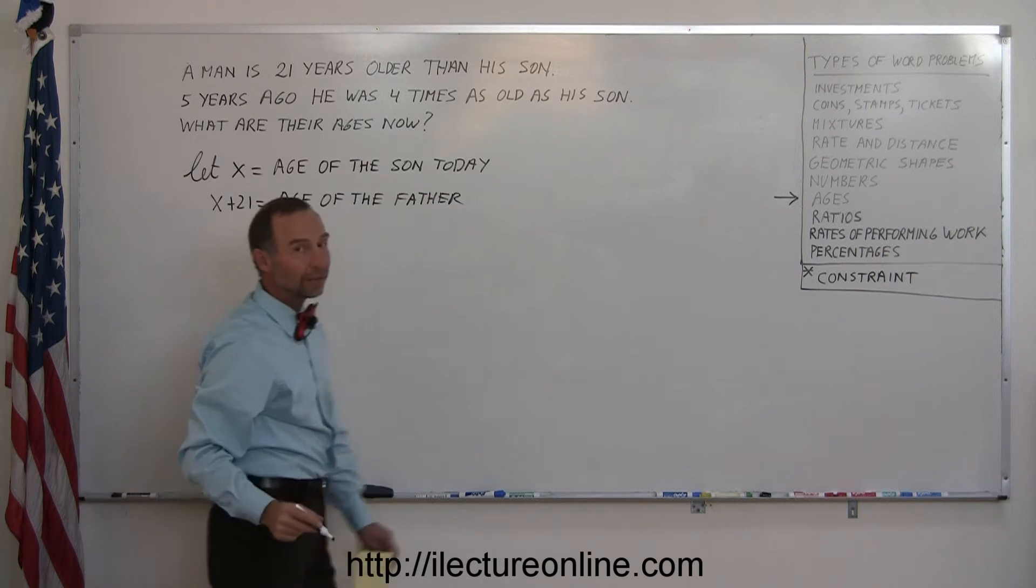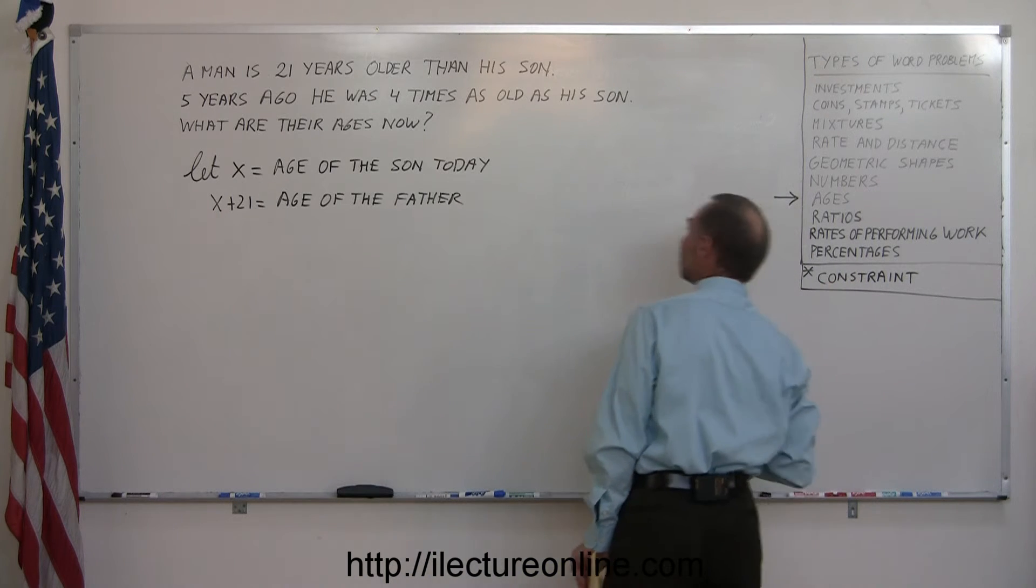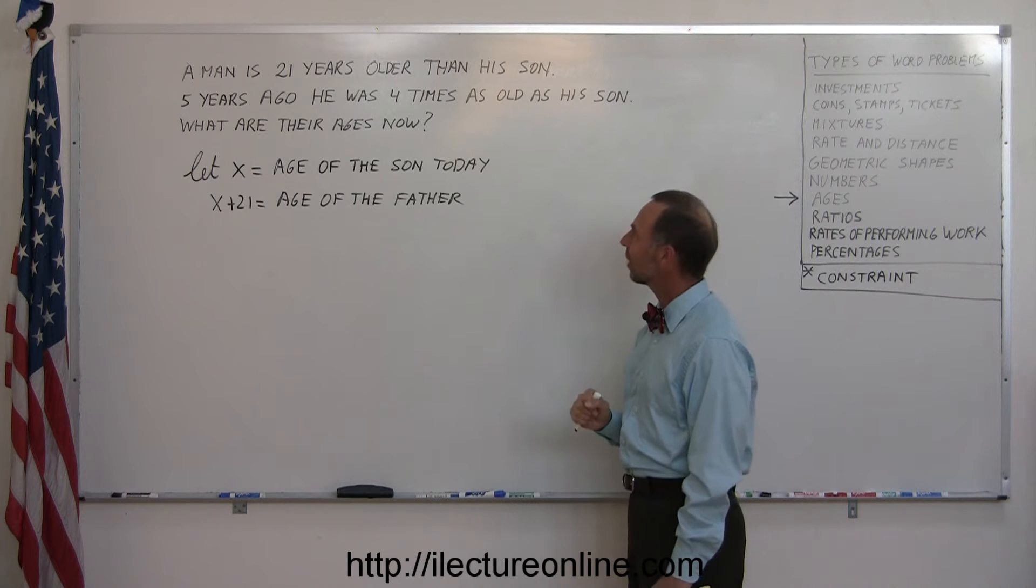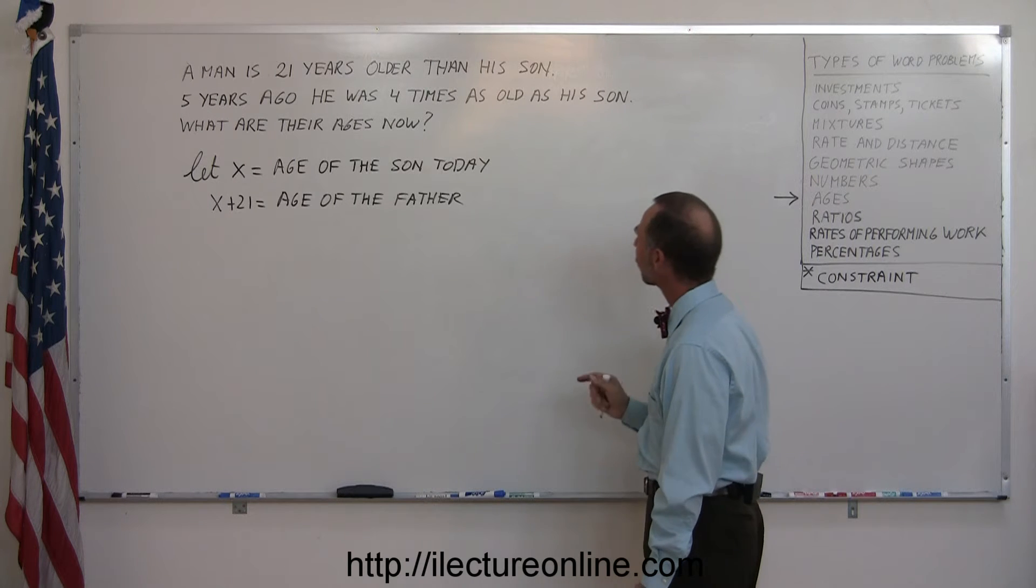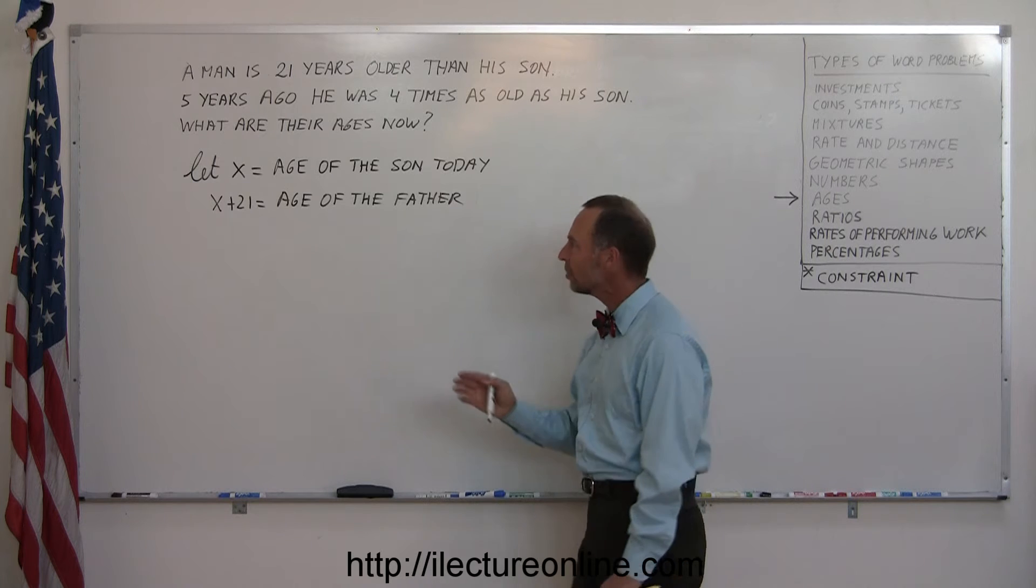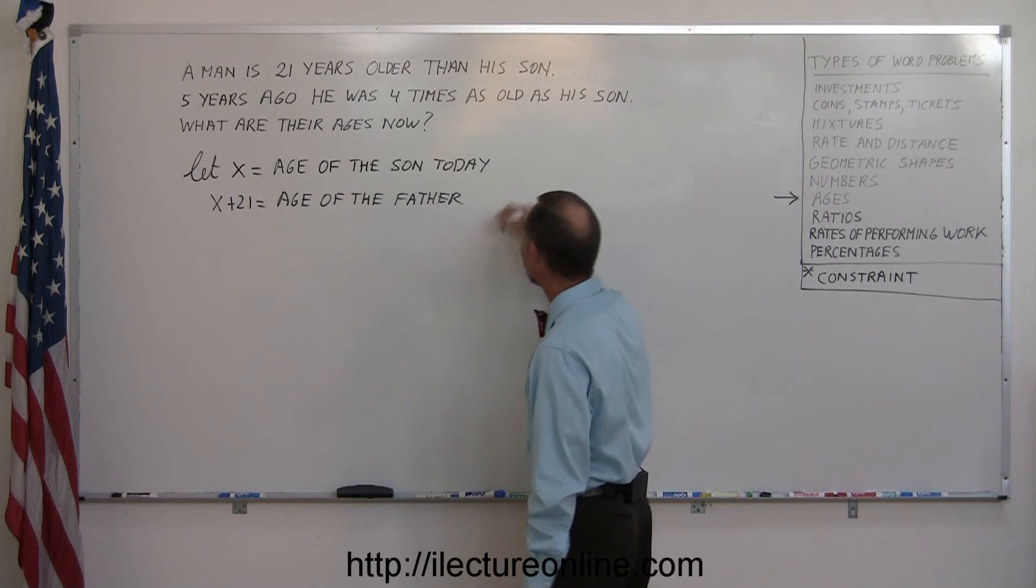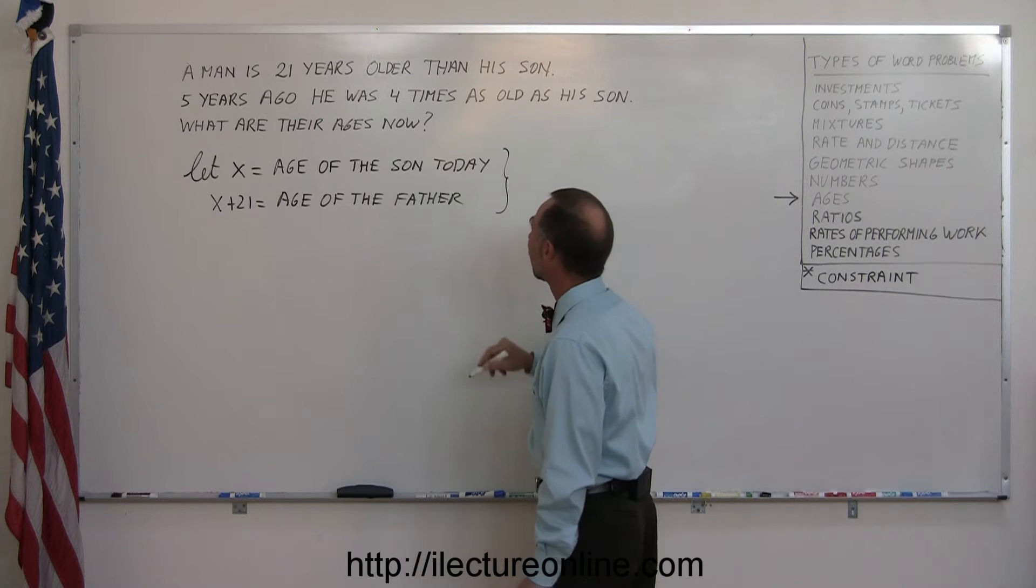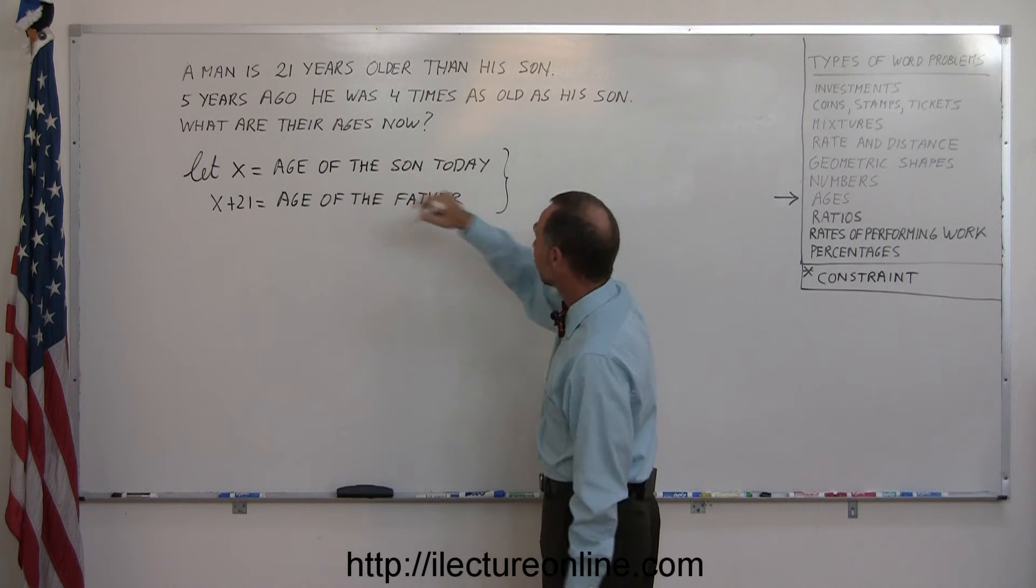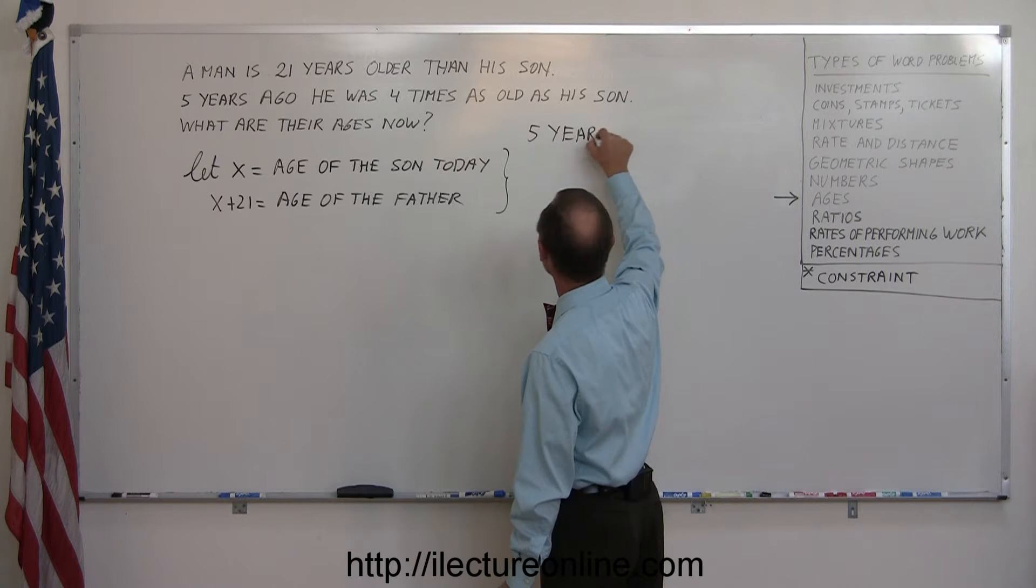Now we need a constraint. We need some sort of equation, some sort of relationship or constraint that allows us to solve this problem. And here it says that five years ago, he was four times as old as his son. Five years ago. So we can't use the definition of what the ages are today. We need to transform that into the ages five years ago. So five years ago, how would we express their ages?